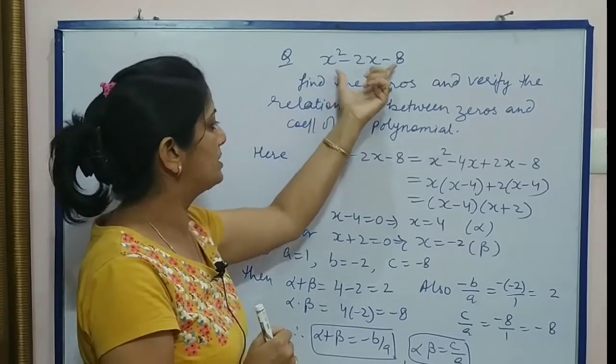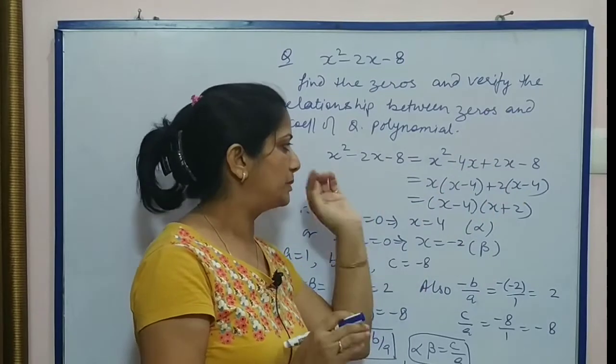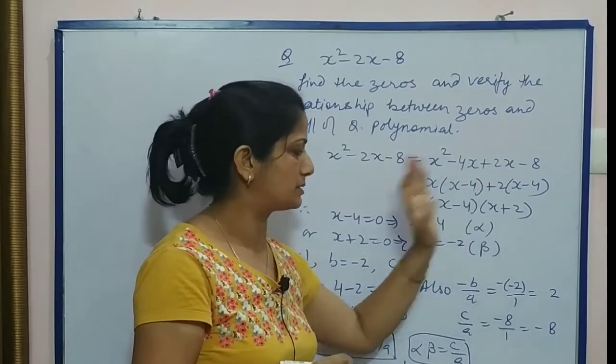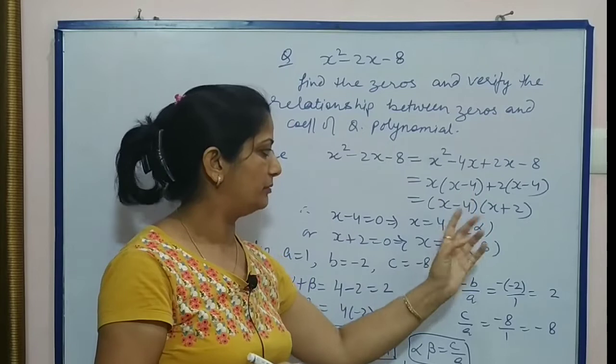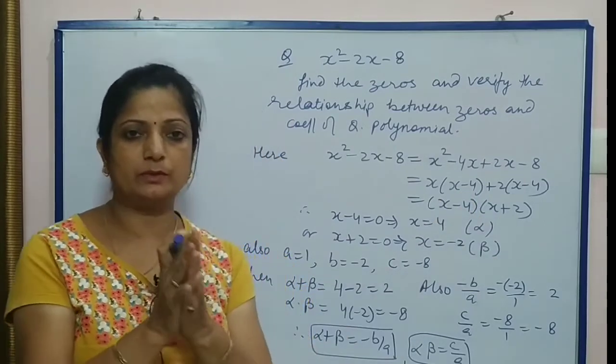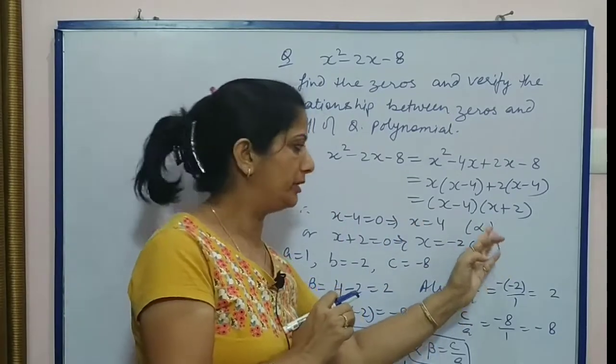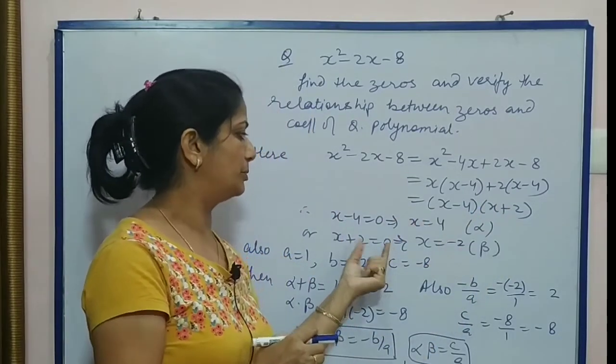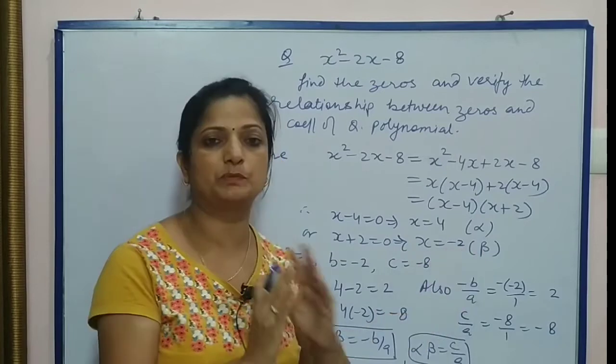Zeros ke liye isko hum ne simply factorize karna hai. Middle term ko split kiya. Hum ne -4x + 2x mein factors kiya. Factors are (x - 4) and (x + 2). First factor ko zero put karenge, jo x ki value hai, that is α. Second factor ko zero ke equal put karenge, jo x ki value hai, that is β.